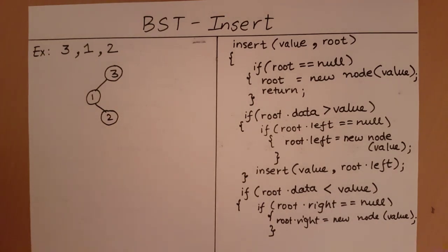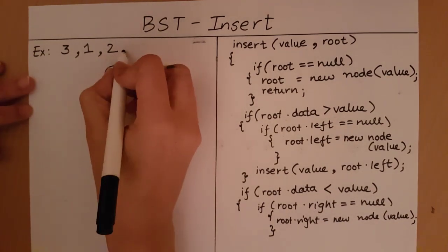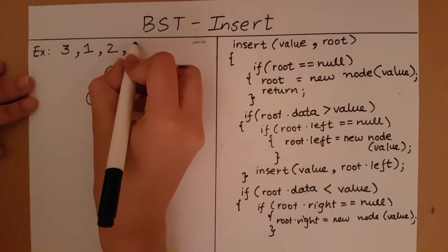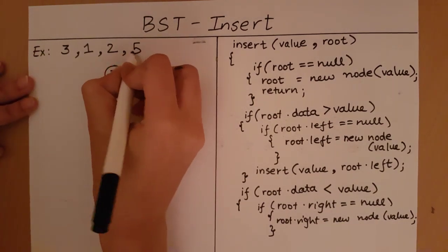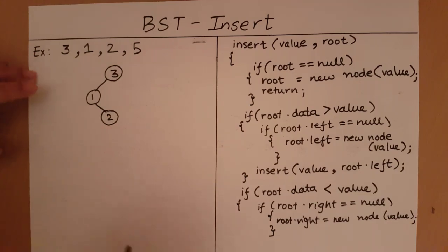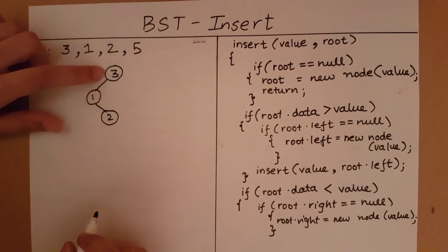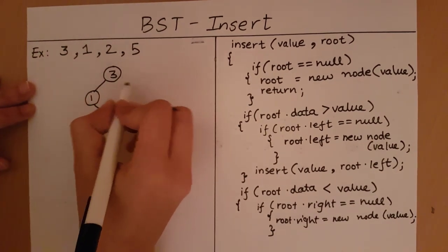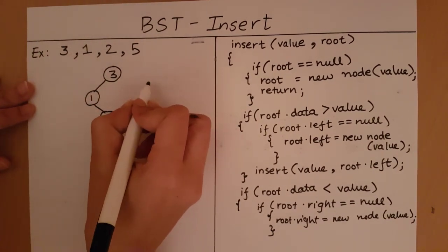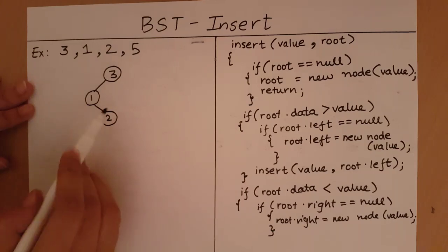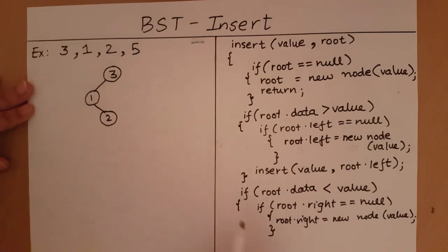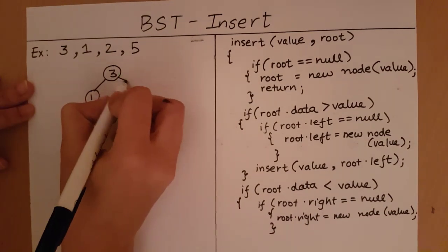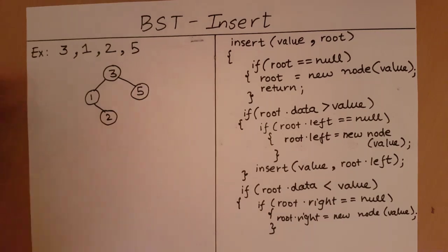Now let's say I want to input 5. My root is 3. 5 is greater than 3 and there is space available to the right of 3, so I set root.right to a new node with value 5.